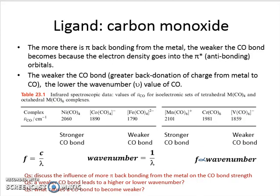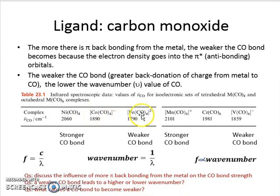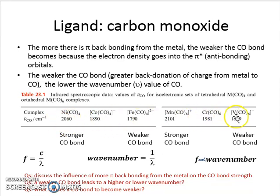Now we are going to look at different metal carbonyl complexes. We have tetracarbonyl nickel with oxidation state zero; tetracarbonyl cobalt with a minus one oxidation state; tetracarbonyl iron with a minus two oxidation state; hexacarbonyl manganese with a plus one oxidation state; hexacarbonyl chromium with a zero oxidation state; and hexacarbonyl vanadium with a minus one oxidation state. We will now look at the infrared measurements of these complexes.